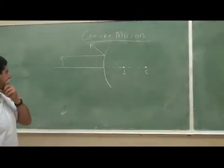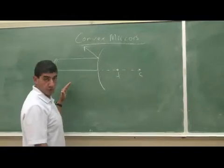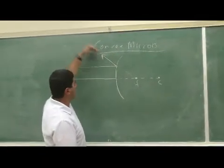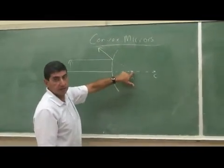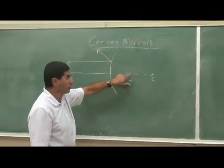So instead of bouncing inward through the focal point, it bounces away and seems to be diverging from the focal point. It seems to be coming from the focal point.